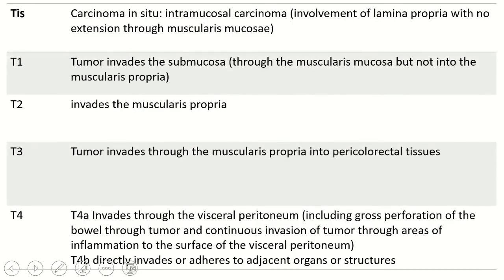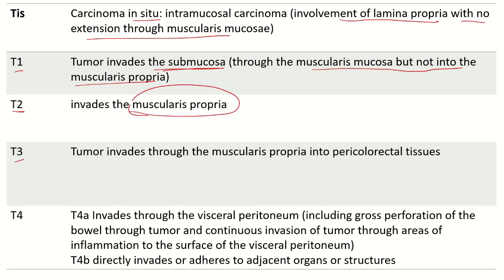So TIS is carcinoma in situ with involvement of lamina propria with no extension to muscularis mucosa. T1 is invasion into submucosa through the muscularis mucosa but not into the muscularis propria. T2 is same as for all other tumors, which is muscularis propria. T3 is pericolorectal tissues outside the muscularis propria. T4a is invasion through the visceral peritoneum, which includes gross perforation of the bowel through tumor and continuous invasion of tumor through areas of inflammation to the surface of the visceral peritoneum. T4b is invasion or adherence to adjacent organs or structures.